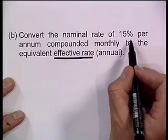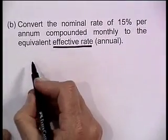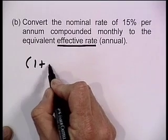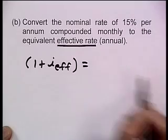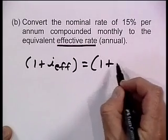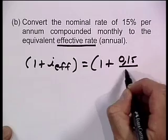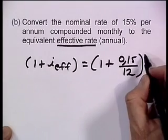Logically, the effective rate must be higher. What's the formula? The formula is: (1 + i_eff) = (1 + 0.15 ÷ 12)^12. Remember what I said — when you do conversions, work within a year.